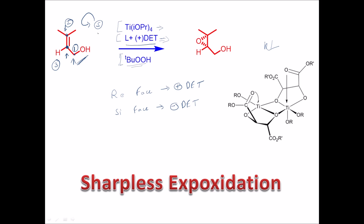Going 1→2→3 in this example is anti-clockwise, so this is S-nomenclature, which corresponds to the Si-face. The face you're viewing from (above the plane, in front of the screen) is the Si-face, and behind the screen is the Re-face. Since +DET attacks from the Re-face, the epoxide is formed below the plane.